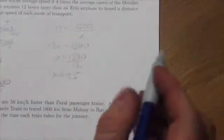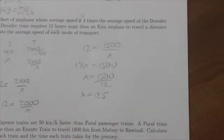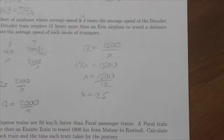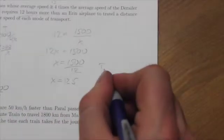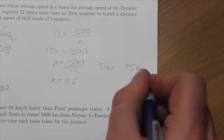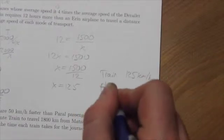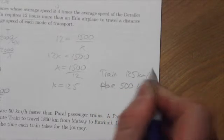Calculate the average speed of each mode of transport. This tells us that the train is going 125 kilometers an hour, and the plane is going four times that. The train goes 125 kilometers per hour. The plane goes 500 kilometers per hour.